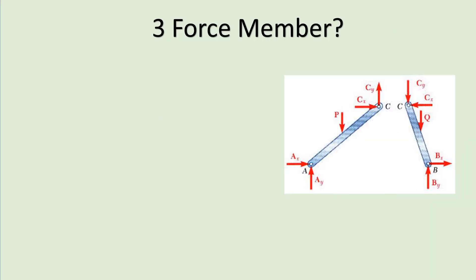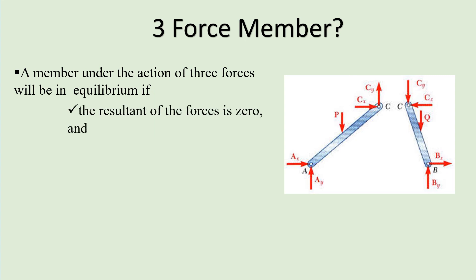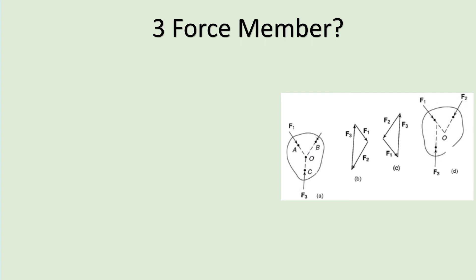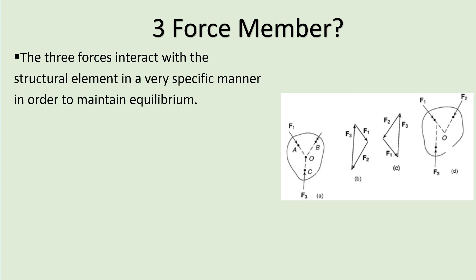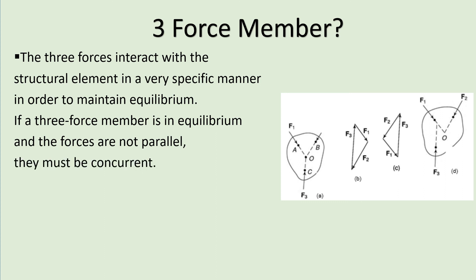For a member under the action of three forces to be in equilibrium, the resultant of all three forces must be zero and the line of action of the forces must intersect at a point, known as the point of concurrency. If a three-force member is in equilibrium and the forces are not parallel, they must be concurrent. Therefore, the line of action of all three forces acting on such a member must intersect at a common point.